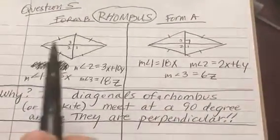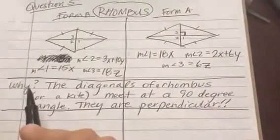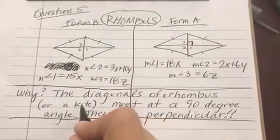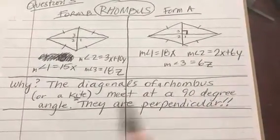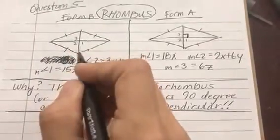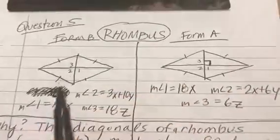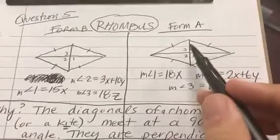Look at how identical that looks. Now I added this little box because I'm trying to point out the rule of rhombuses and technically kites as well. The diagonals of a rhombus or a kite meet at a 90 degree angle, which means that diagonals are perpendicular.